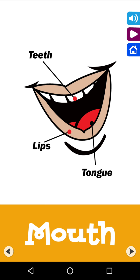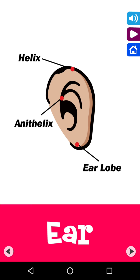Your mouth is made up of lips, teeth and tongue. Your ear consists of helix, anti-helix and earlobe.